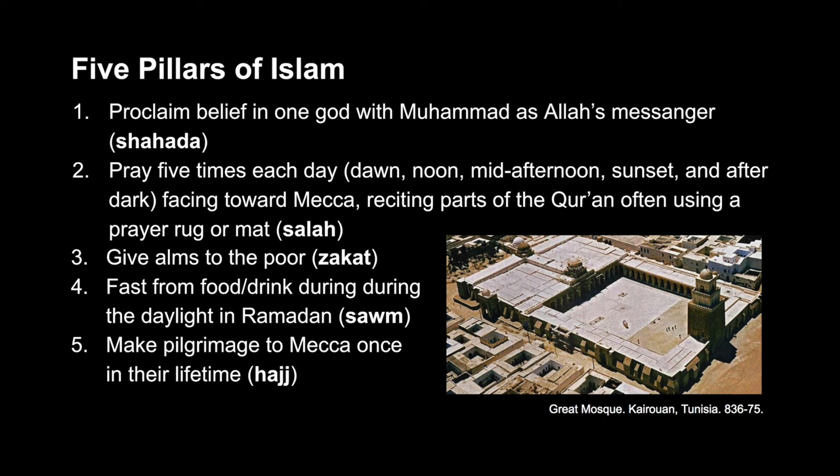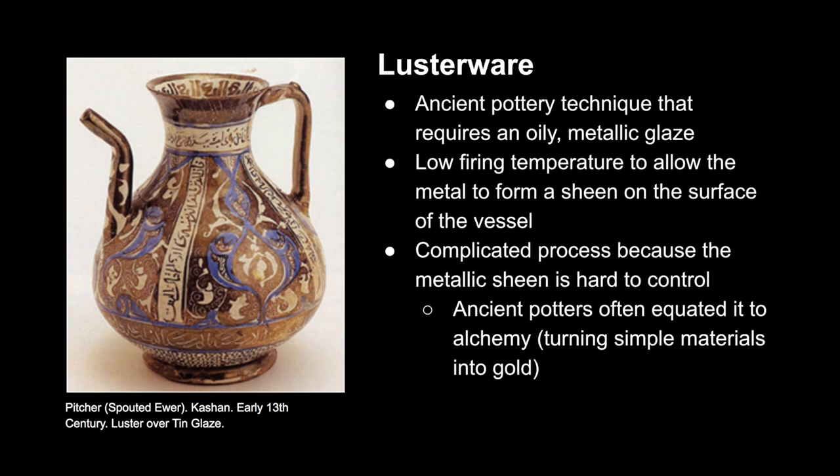The third pillar is to give alms to the poor, which is basically donating a calculated percentage of their income to those in need. The fourth pillar is to fast from food and drink during the daylight hours of Ramadan, which is the ninth month of the Muslim calendar, reserved for fasting and prayer as a community. The fifth pillar is to make pilgrimage to Mecca, at least once in their lifetime, as long as the person is financially and physically able.